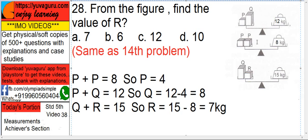Both are equal. So now, P plus Q equals to 12. Okay. So P is 4. So Q equals to 12 minus 4, 8.